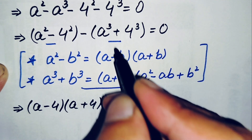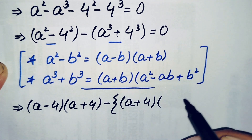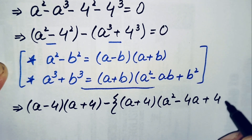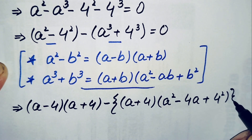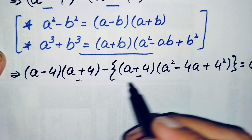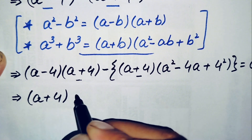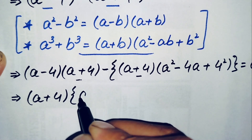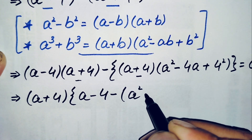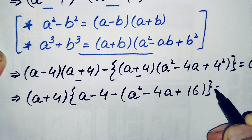Applying the first identity, this becomes a minus 4 times a plus 4. Then applying the cubic identity to the second term, we get minus a plus 4 times a squared minus 4a plus 4 squared. Now a plus 4 is common to both expressions, so we take it out. This gives us a plus 4 times the quantity a minus 4 minus the quadratic a squared minus 4a plus 16, all equal to 0.